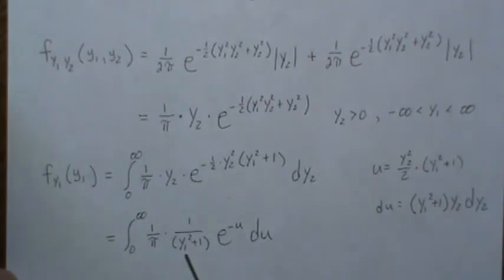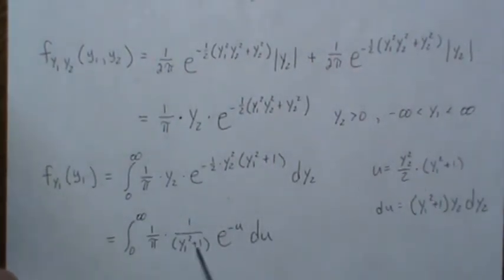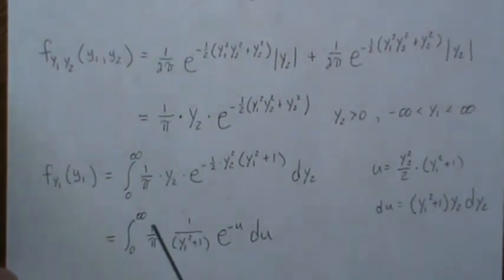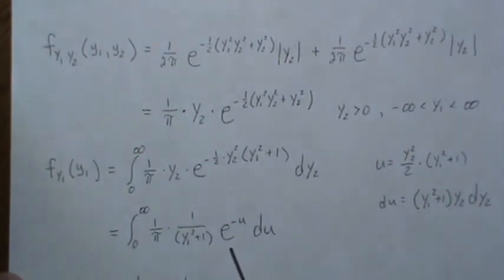We get this, take the derivative, plug this information back in here, we get this. So in the Y2 world, if you plug in zero you get zero, and if you plug in infinity this goes to infinity, so u goes to infinity.